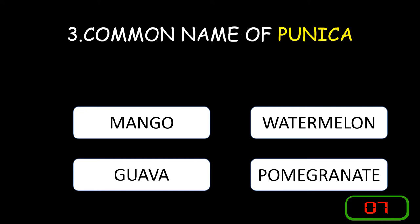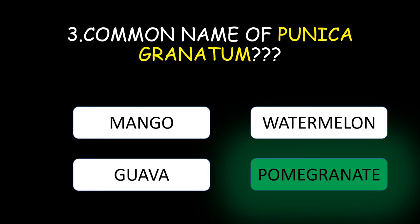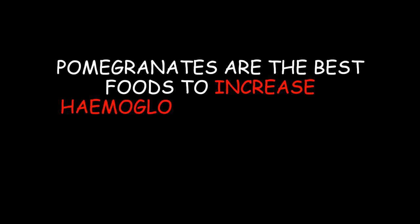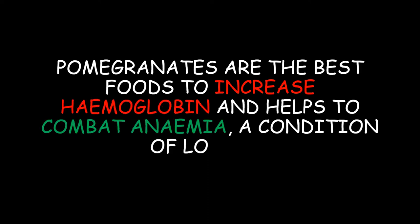The common name of Punica granatum is pomegranate. Pomegranates are one of the best foods to increase hemoglobin and help combat anemia. Anemia is the condition in which we have a low count of red blood cells.